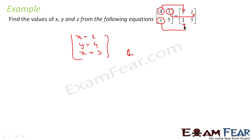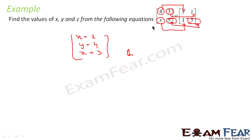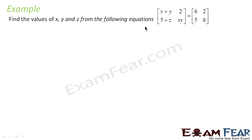Since the matrices are equal, the corresponding elements must be equal. So x = 1, and we verify that 5 equals 5 as the corresponding element — that is how it works. The corresponding elements must be the same.